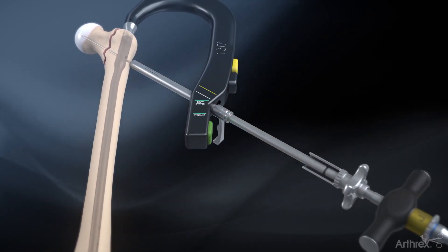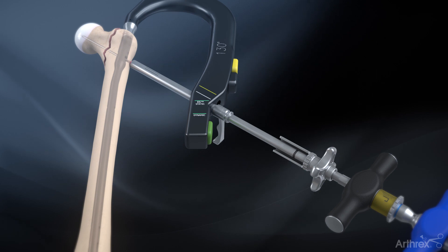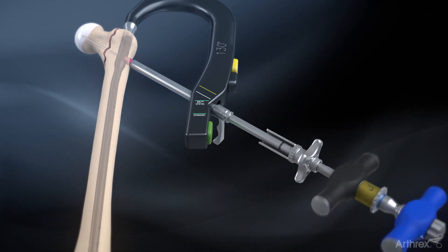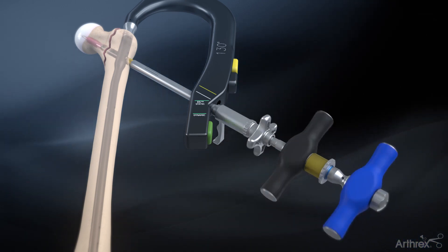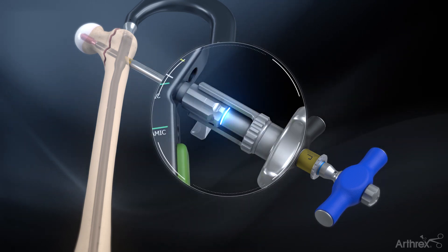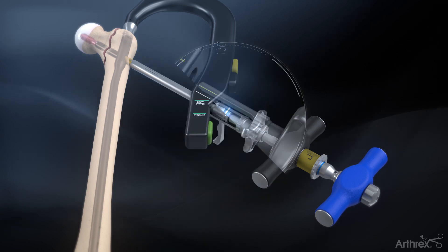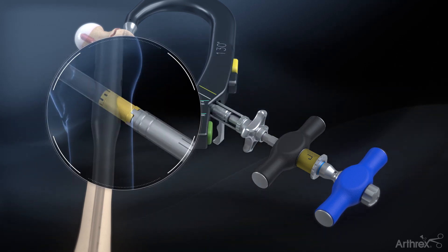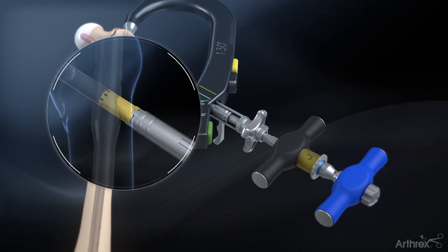Slide the lag screw inserter assembly over the guide pin and through the lag screw sheath. Rotate the assembly clockwise with the blue handle. When the black laser marking on the inserter reaches the sheath, the lag screw has exited the other end of the sheath. It is recommended to insert the lag screw further if intraoperative compression is planned.